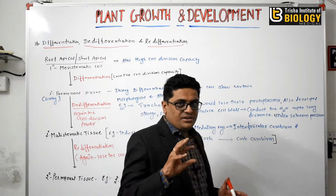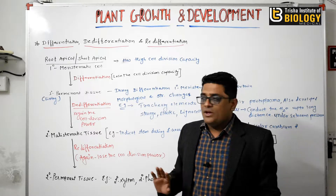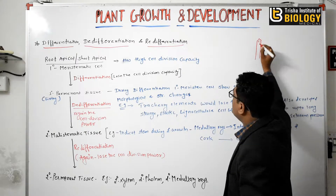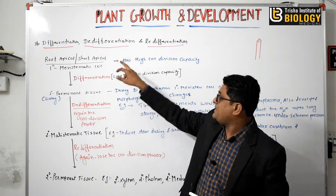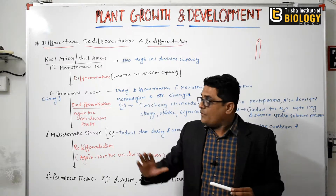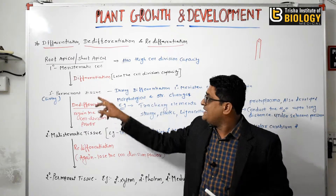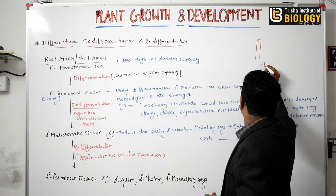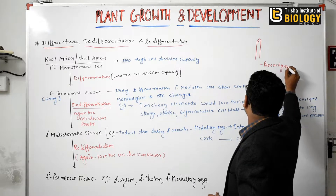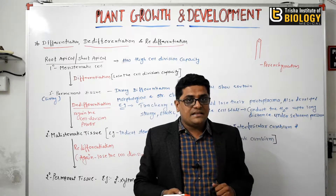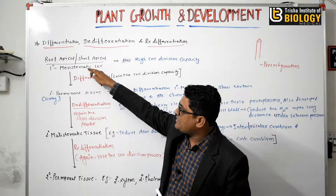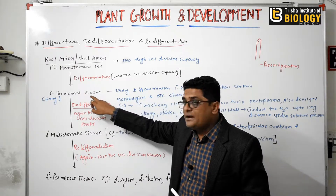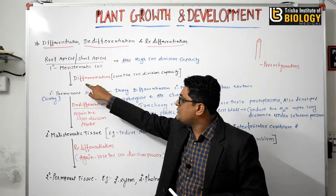So what are the terms de-differentiation, differentiation, and re-differentiation? We all know that the apical part of the root or apical part of the stem possesses the apical meristem. The meristematic cell has high cell division capacity. But when this apical meristematic cell loses its cell division capacity and is converted into permanent tissue — that is primary permanent tissue — for example, parenchymatous cells, sclerenchymatous cells, or collenchymatous cells. This process is known as differentiation.